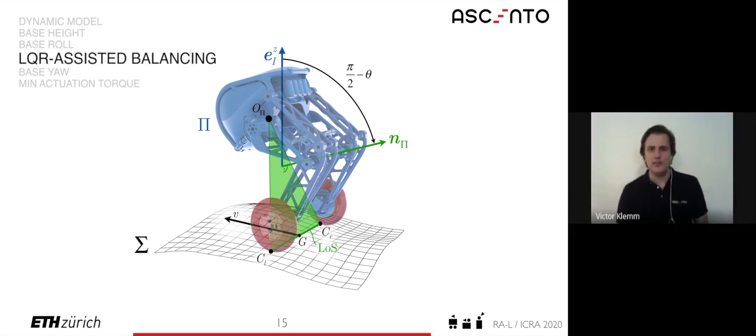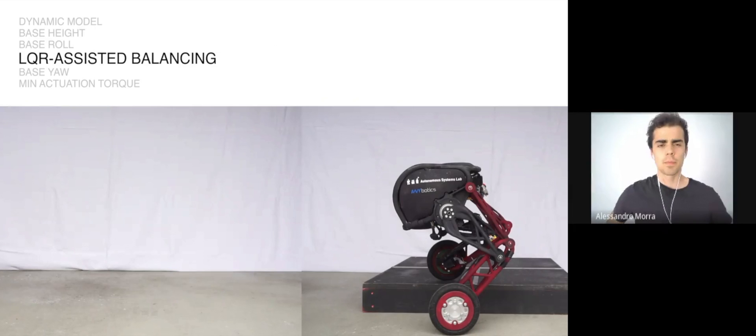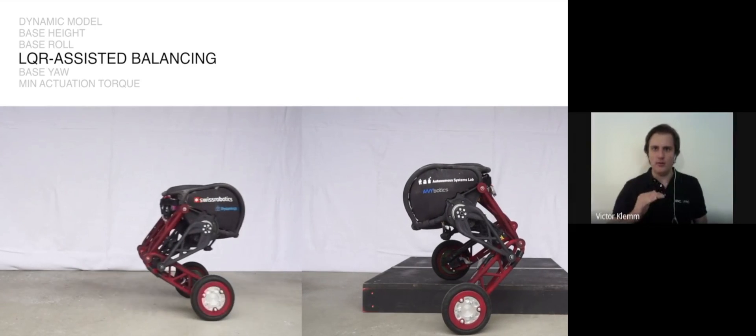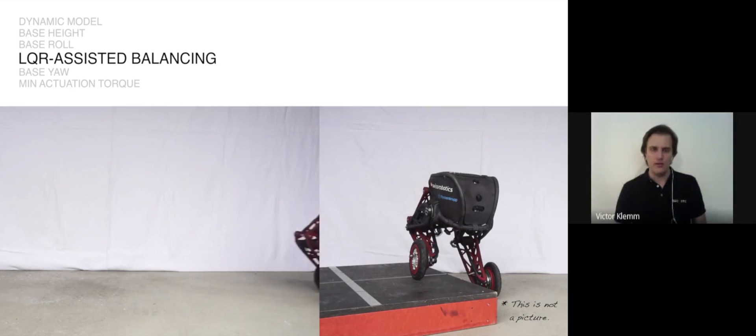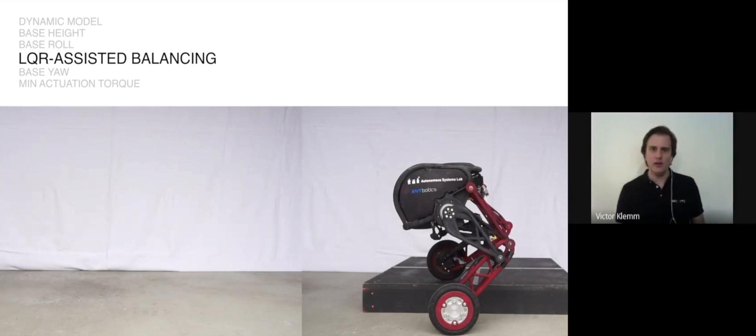But how does it balance? Balancing is achieved by integrating an LQR into the whole body controller as a motion task. The model is instantaneously linearized around its current operating point by lumping different bodies together as shown in blue for the pendulum body and in red for the wheels. But can this cope with different leg extensions now? Yes. The linearization is performed using the current robot configuration in every control iteration. So in our case at the controller frequency of 400 hertz.